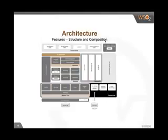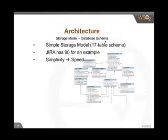In our architecture, we have a very simple lean model with only 17 table schemas. You can compare it with vendors like JIRA, the well-known issue tracking system, which has 90-plus tables. We deal with only 17 tables. Now let's go through key features and how they help you build a proper governance platform for your enterprise and meet SOA requirements.